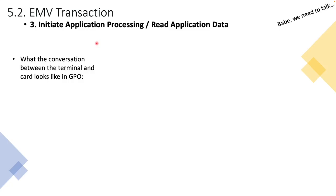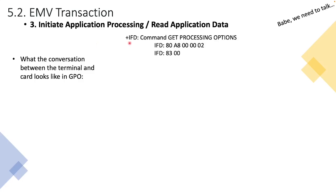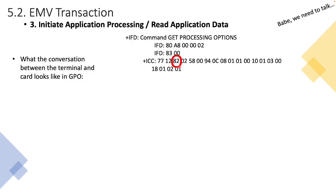You can actually grab the lower-level logs to do diagnostics and analysis. I've used a tool I'm familiar with, and throughout the videos I'll drop in sample logs or sample transaction logs showing what the conversation between the terminal and card looks like. In GPO — GET PROCESSING OPTIONS — we see IFD, which indicates the terminal, issuing a GET PROCESSING OPTIONS command. The card, the ICC, will respond with a string of data.